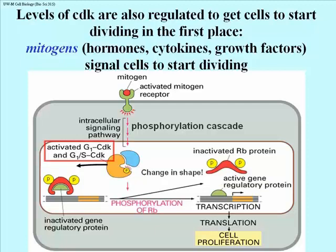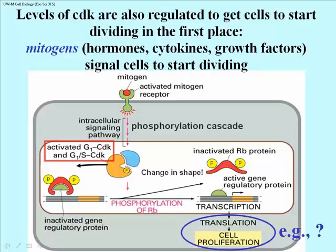These in turn phosphorylate the RB subunit of a transcription factor that represses several genes. RB is the retinoblastoma protein, found in fact in all cells, but originally associated with a mutation causing eye tumors, hence the name retinoblastoma. The RB protein is the inhibitory subunit of a transcription factor. When it's phosphorylated, it dissociates from the DNA binding subunit of that transcription factor, which can then turn on some genes.